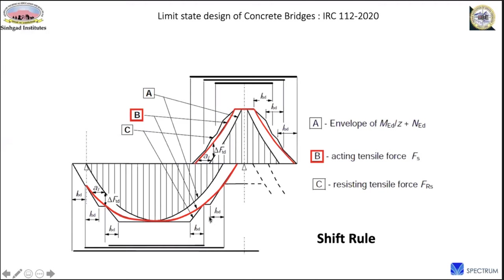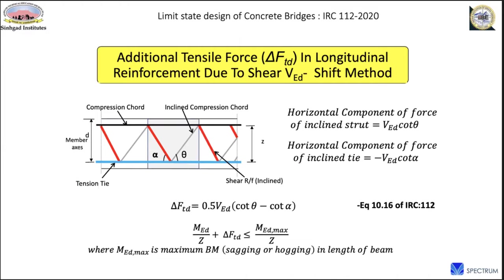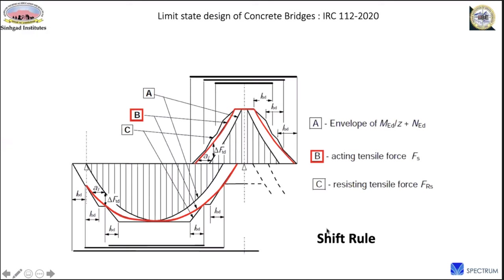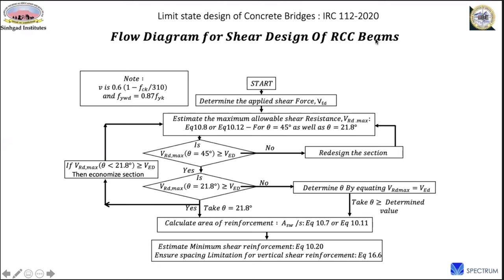The shift rule is illustrated by curves: Curve C is the resisting bending moment envelope and Curve A includes both the flexural requirement and the additional tensile force due to shear. The total tensile reinforcement provided must envelope both requirements. Whatever curtailment point is used, the lap must be extended by the shift amount. This must be kept in mind when detailing reinforcement for beams. The flowchart for RCC beam design follows the same principles — removing the prestress terms gives the design rules for reinforced concrete beams.